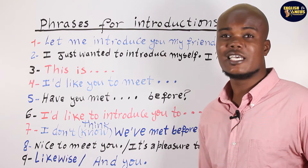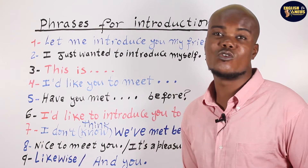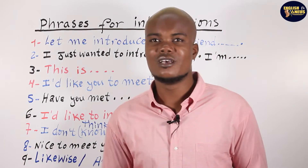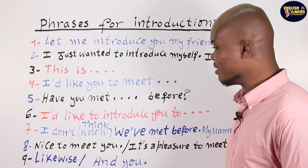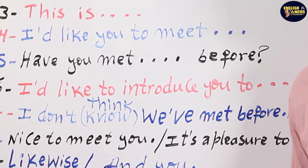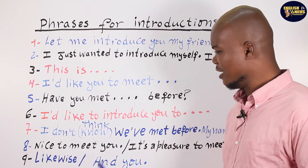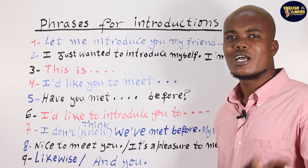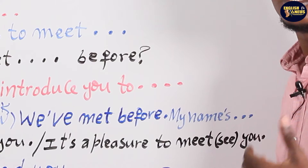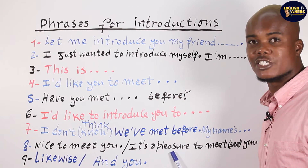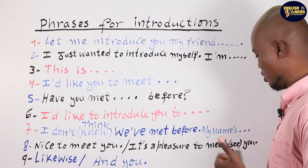So that's another way you can introduce yourself. Another very simple way: you greet the person — 'Hello' — then say: 'Nice to meet you.' That means 'Mwen kontan ankontre ou.' You can say 'Nice to meet you' or 'Nice to see you.' Or you can say: 'It's a pleasure to meet you.' Or 'It's a pleasure to see you.' 'Pleasure' — say it clearly: 'ple-zhure.' 'It's a pleasure to meet you.'